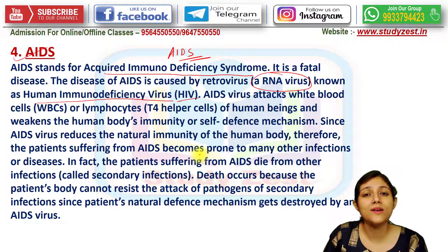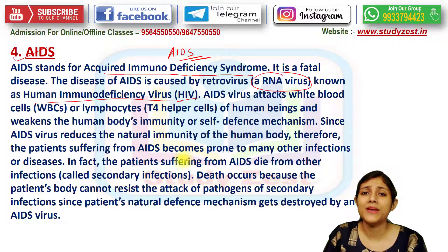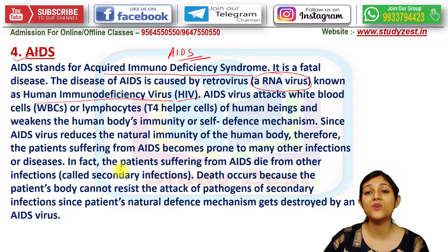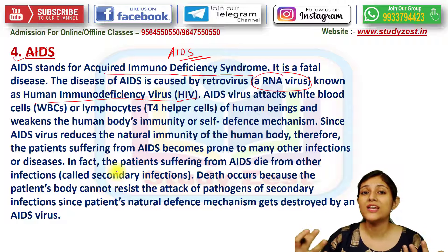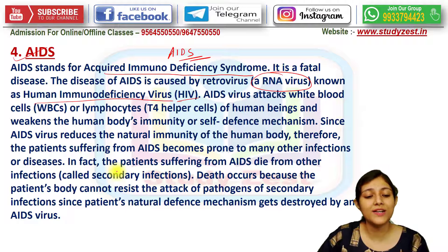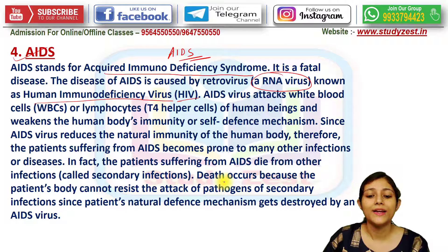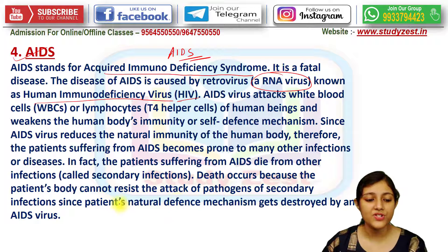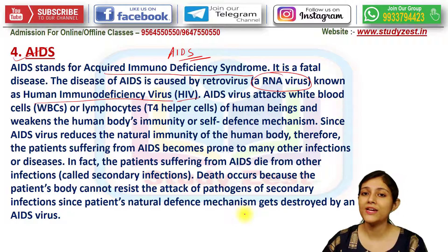Because the natural immunity of the AIDS patient is very weak, common diseases that a healthy person could fight off easily can now readily infect the patient. Persons suffering from AIDS may die from secondary infections. Death occurs because the patient's body cannot resist the attack of pathogens of secondary infections, since the patient's natural defense mechanism gets completely destroyed by the AIDS-causing virus.